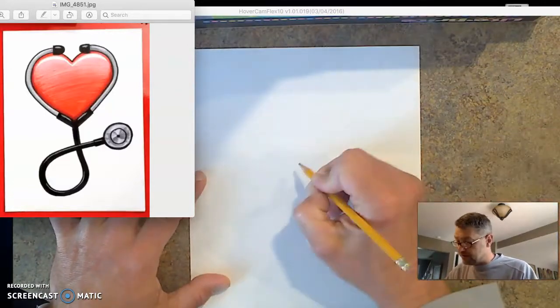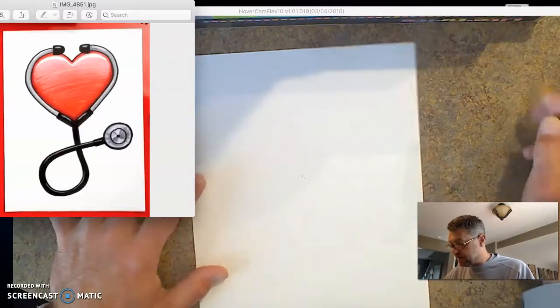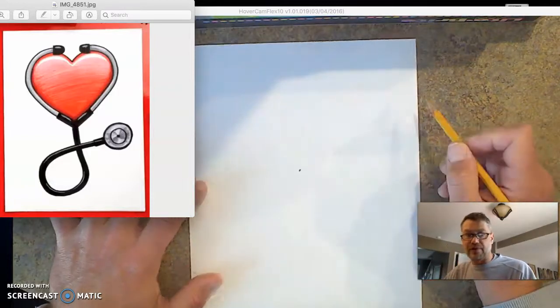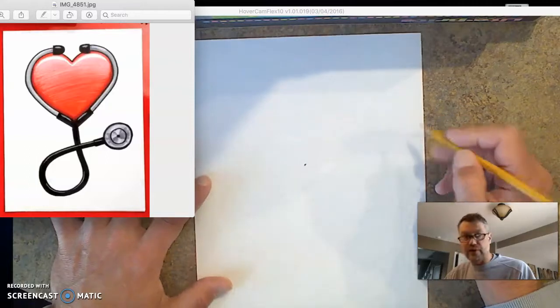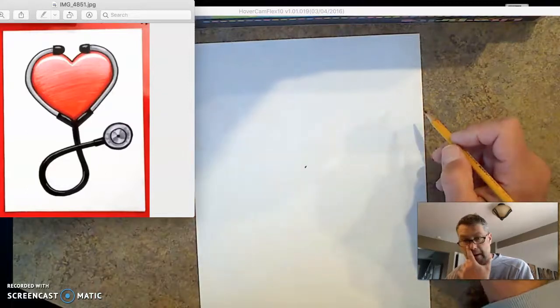And the next thing I'm gonna do is put a little dot kind of in the middle of the paper so when you're working you can see my dot. You put a dot on your paper so that you know where to make your lines.